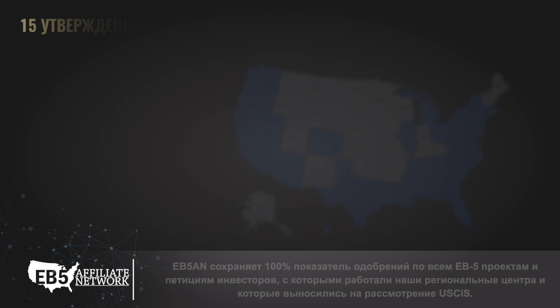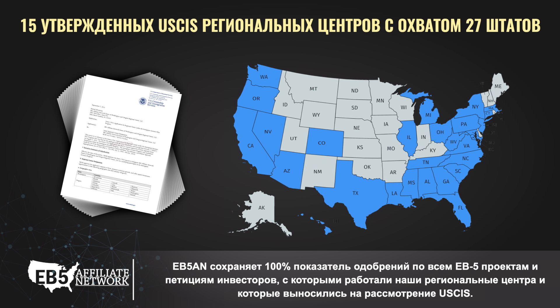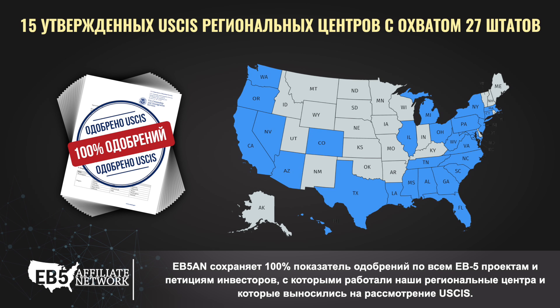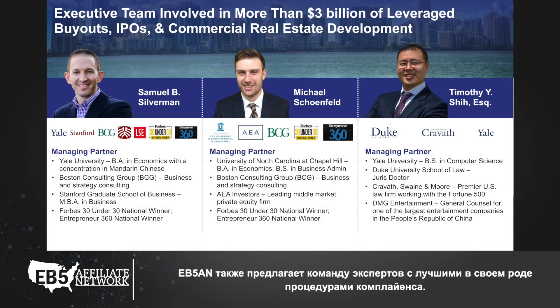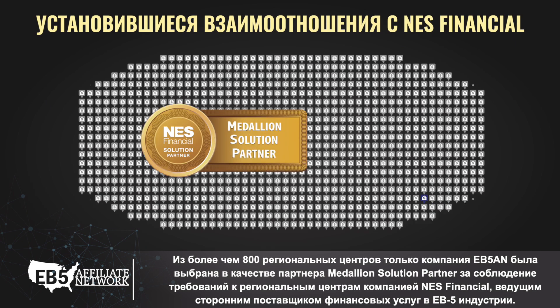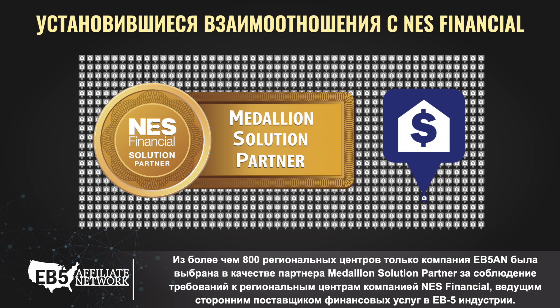EB-5AN has maintained a 100% approval rate on all USCIS-adjudicated EB-5 projects and investor petitions associated with our regional centers. EB-5AN also offers an expert team with best-in-class compliance processes. Out of more than 800 regional centers, EB-5AN is the only one selected as a medallion solution partner for regional center compliance by NES Financial, the leading third-party financial services provider in the EB-5 industry.